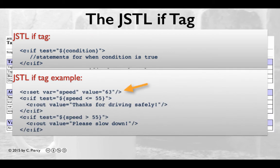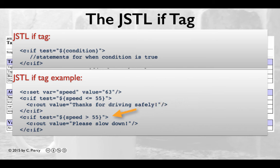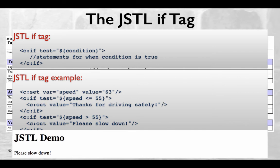Here's an example. In our first statement, we've created a variable called speed and set it to the value of 63. Then we're using our JSTL if tag to test whether the speed is less than 55. If that turns out to be true, we're printing out a note thanking the driver for driving safely. If it's false, then that particular line will not be implemented. Further in this example, we apply another if test to check whether the speed is greater than 55. If the speed happens to be greater than 55, we print out a message asking the driver to please slow down. Since the speed is greater than 55, the results will show the message please slow down.